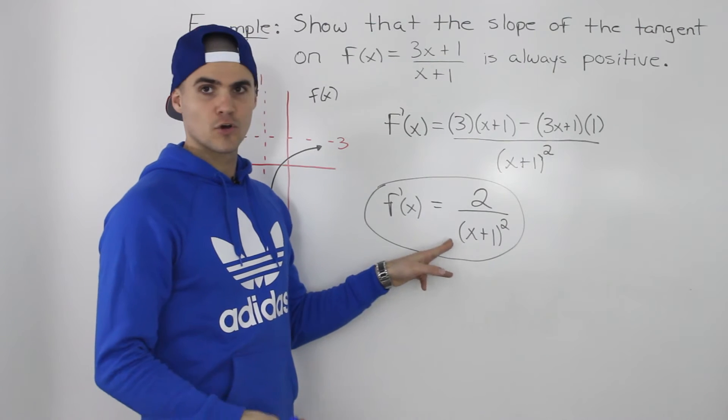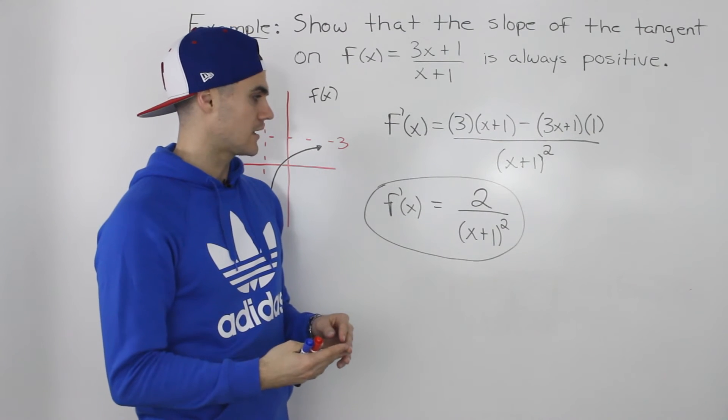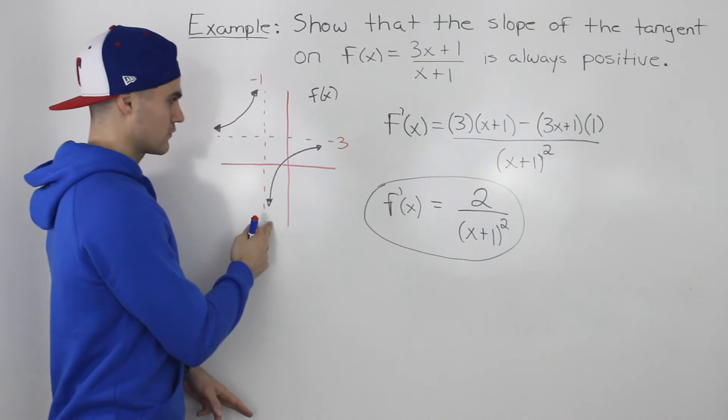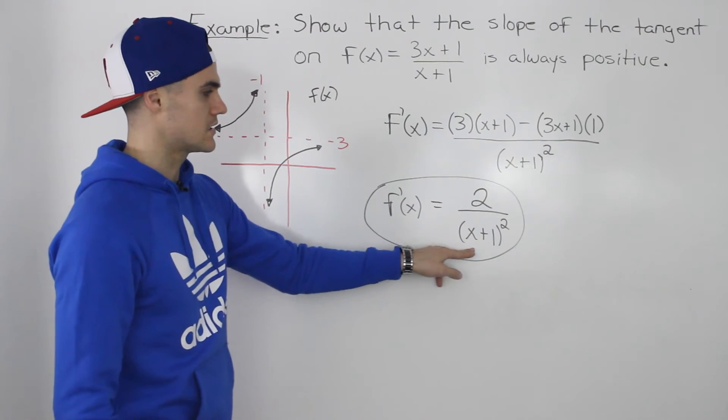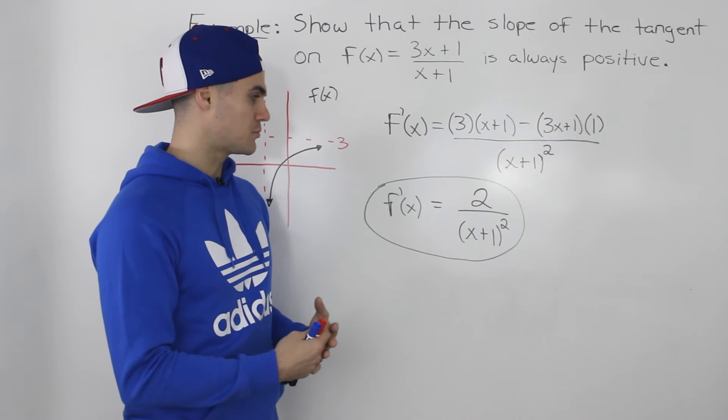Now notice, with this derivative, no matter what x value we plug in, except for x = -1 of course, because there's a vertical asymptote there. At x = -1, the derivative is non-existent. But any other x value that we plug in,